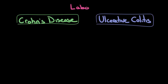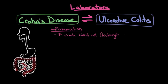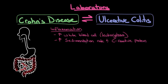Since the history and physical is fairly nonspecific, the next step in the diagnostic workup is to perform some laboratory studies, which tend to be fairly similar between Crohn's disease and ulcerative colitis. The first set of laboratory findings are markers of inflammation, including an increased white blood cell count — known as leukocytosis — as well as an increased sedimentation rate and an increased C-reactive protein. These findings are very nonspecific, meaning any inflammatory condition can cause them. However, they're very sensitive for inflammatory bowel disease — if someone doesn't have an increased sedimentation rate or C-reactive protein, the process is likely not Crohn's disease or ulcerative colitis.